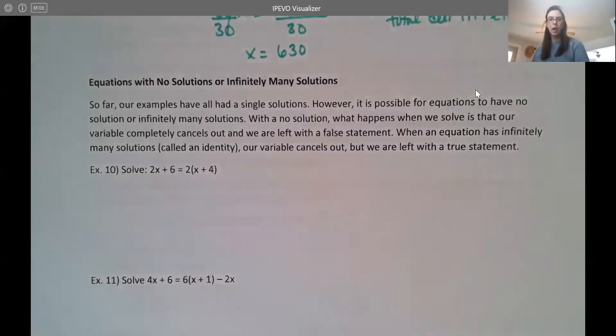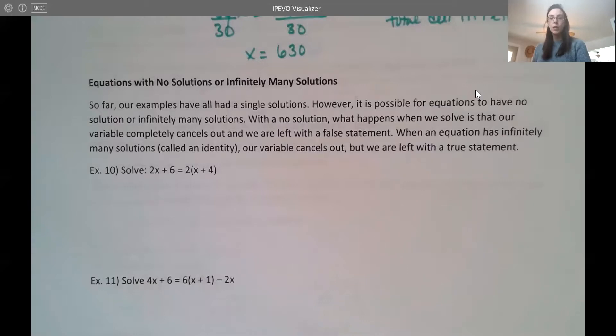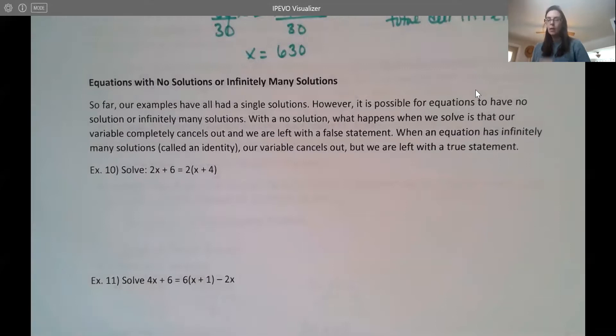The last thing I want to talk about in this section are exceptions when we're solving. Usually, and particularly in the examples we've seen, we tend to get a finite number of answers for equations. Now, the examples we've seen, we've had one answer. It is possible to get more than one answer, but usually you get a fixed number of answers.